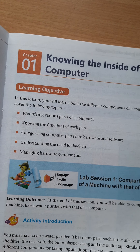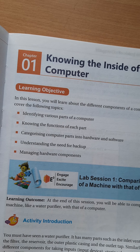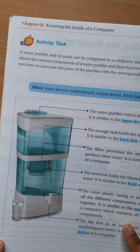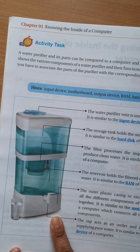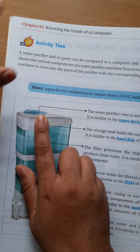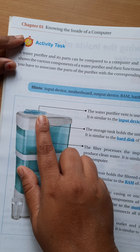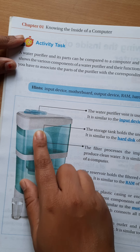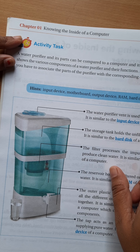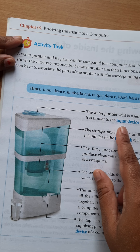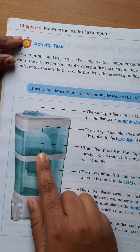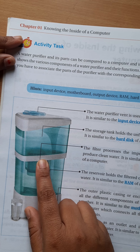We have taken the example of a water purifier to compare with computer parts. The first part is the water inlet — from here we can pour water inside. It is similar to the input devices of a computer: keyboard and mouse, from where we can input data.